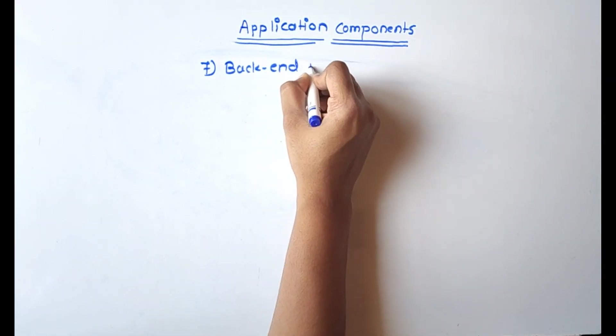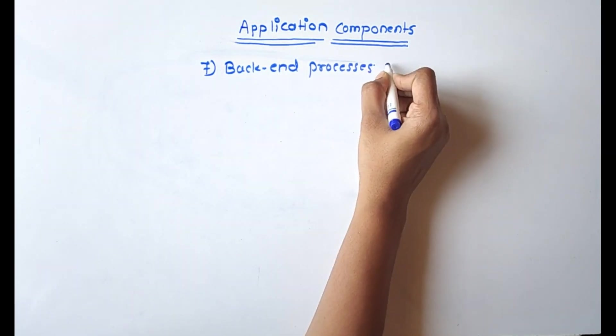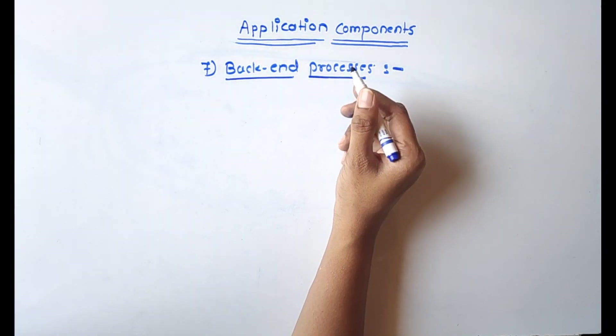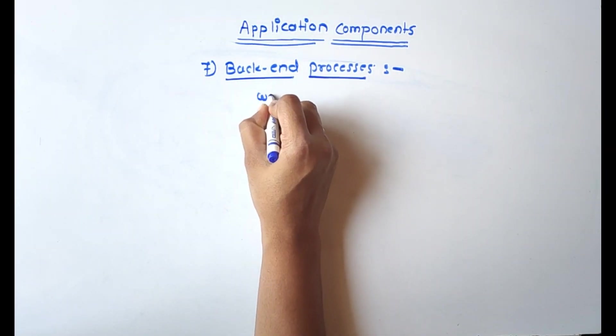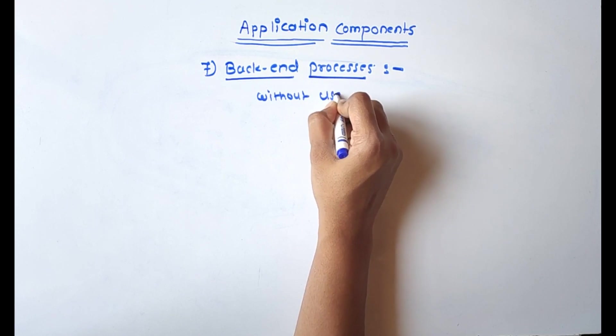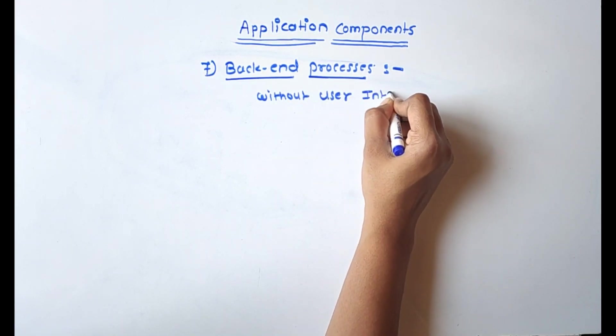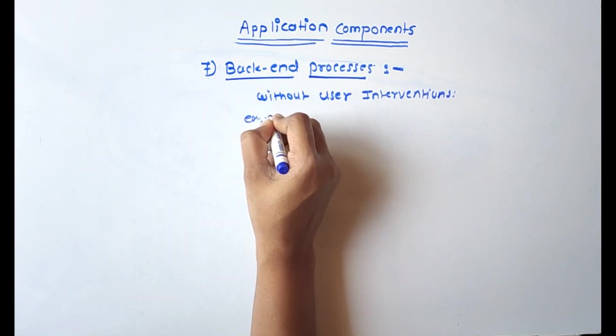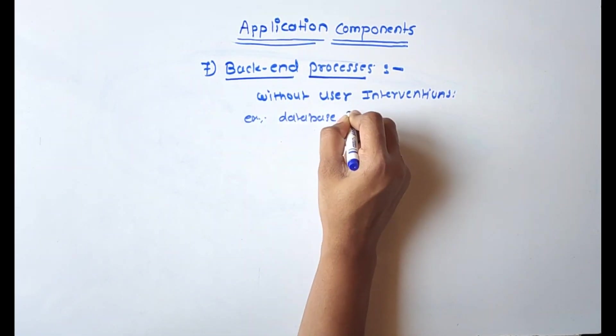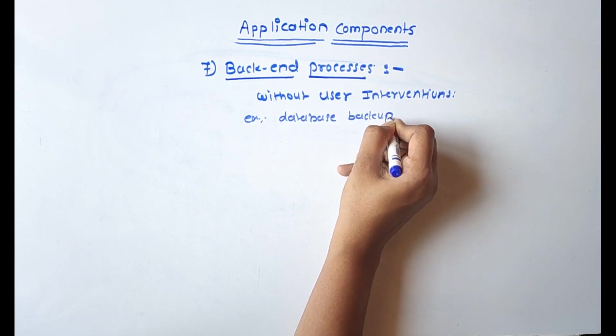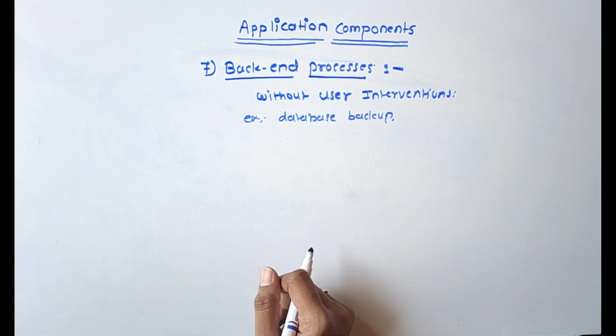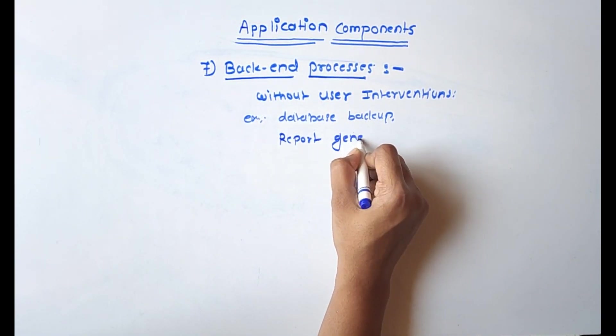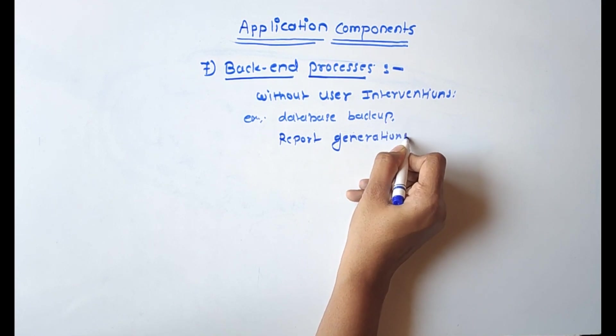Now seventh one is backend processes. It is nothing but the automatic job running without user interventions. For example, database backup, then transfer of some data to another system, then report generations, etc.